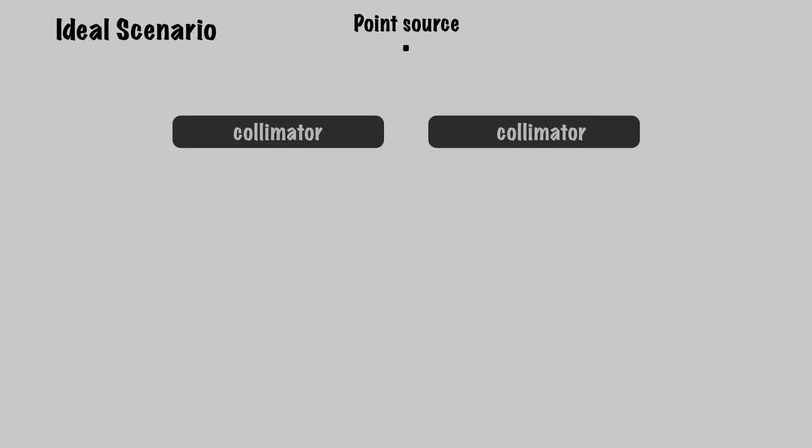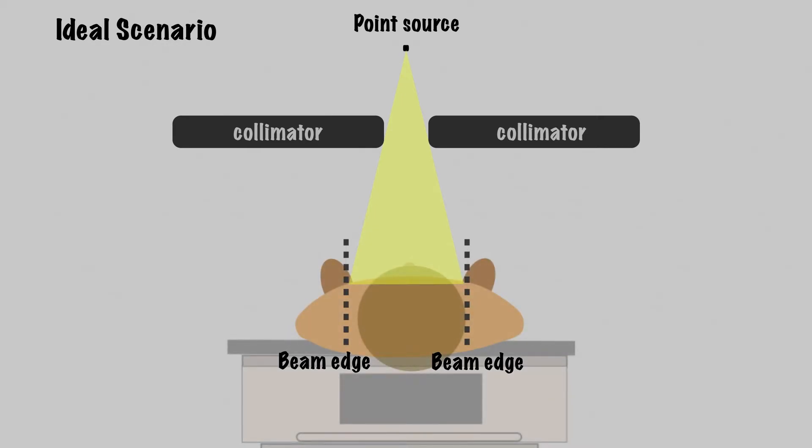Here is our collimator. This can be a multi-leaf collimator or a jaw that creates the photon field size and shape. The photons come out of the source like this to create the beam path. These are the edges of the beam. Now let's bring in our patient, zooming into the skin surface, which is set up at some distance from the source.